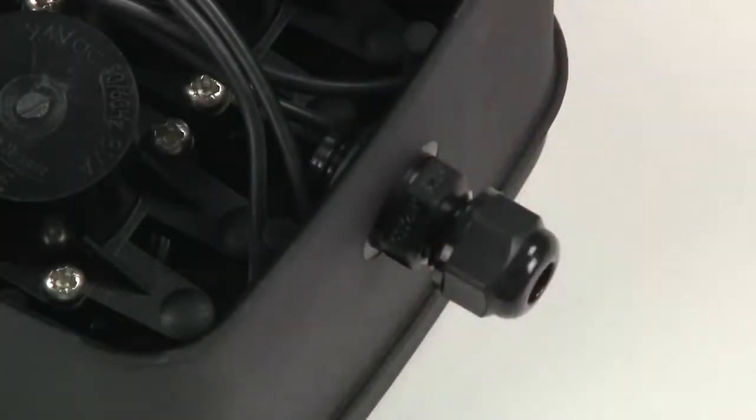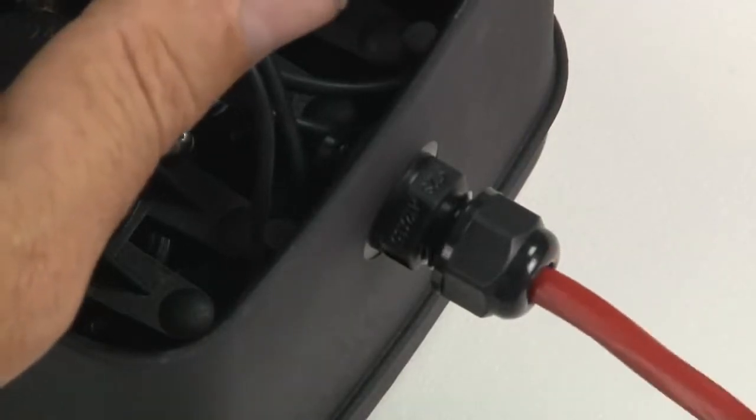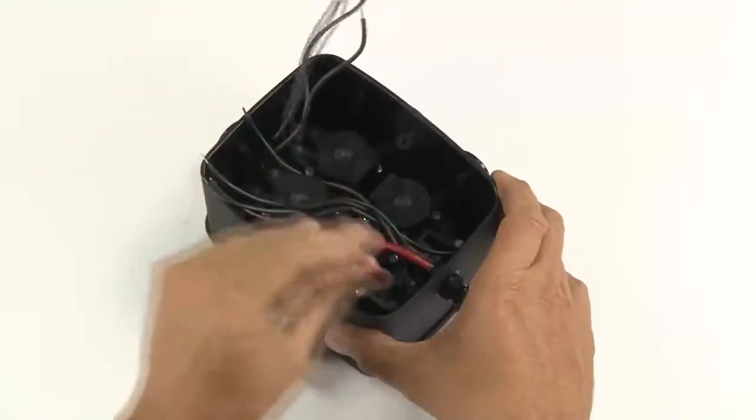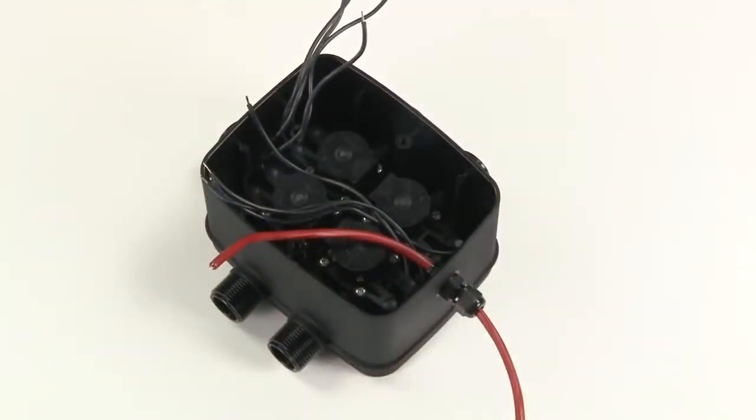Then loosen the large nut on the outside of the box and push through your irrigation cable. Allow enough cable to work with; you can pull the excess back through the gland when you've connected your solenoids.